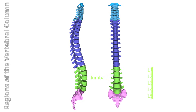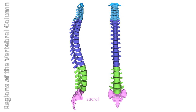Lumbar region: comprises five vertebrae located inferior to the rib cage and superior to the pelvis and sacrum. These are the largest vertebrae, primarily bearing the weight of the upper body. They articulate superiorly with the 12th thoracic vertebra and inferiorly with the first sacral vertebra at the lumbosacral joint.